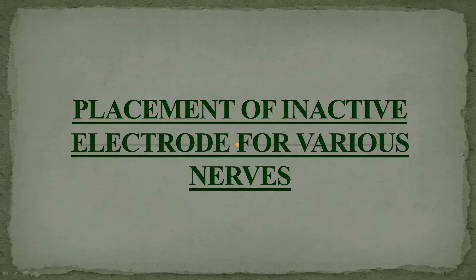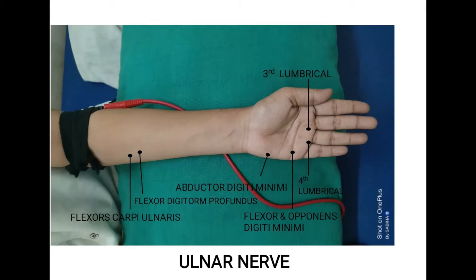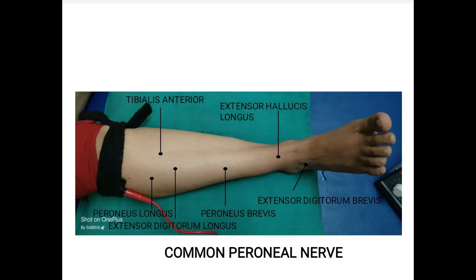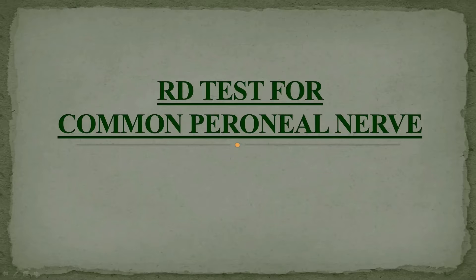Placement of the inactive electrode is described for various nerves: radial nerve, ulnar nerve, median nerve, common peroneal nerve, and tibial nerve. The RD test for the common peroneal nerve is demonstrated, beginning with the tibialis anterior muscle.